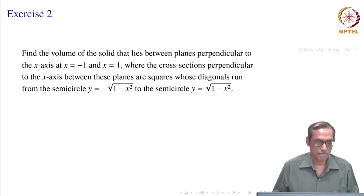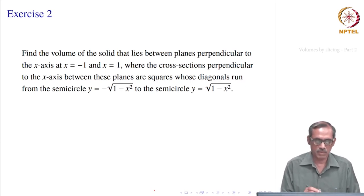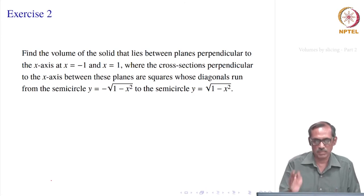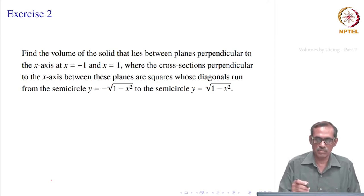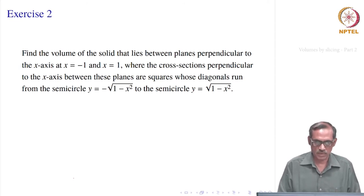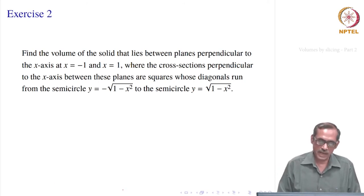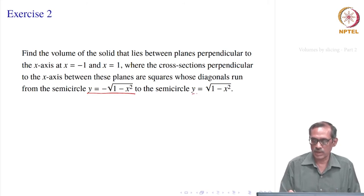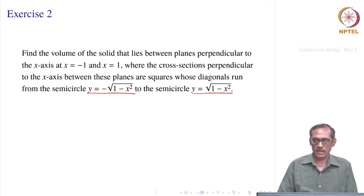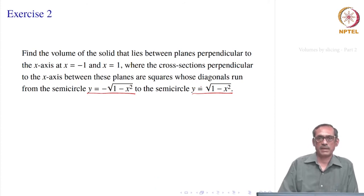Let us take the next problem: find the volume of the solid that lies between planes perpendicular to the x-axis at x = −1 and x = 1. The solid lies between two planes at x = −1 and x = 1, so we have the limits for x. We must have the cross sectional area expressed in terms of x. The cross sections perpendicular to the x-axis between these planes are squares.